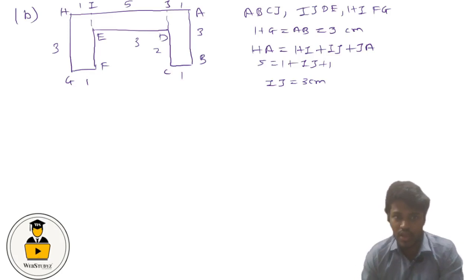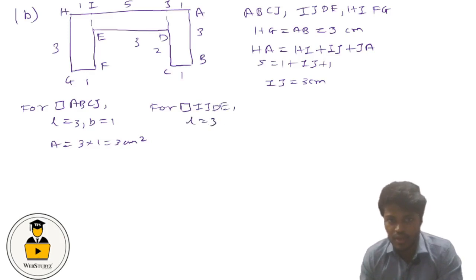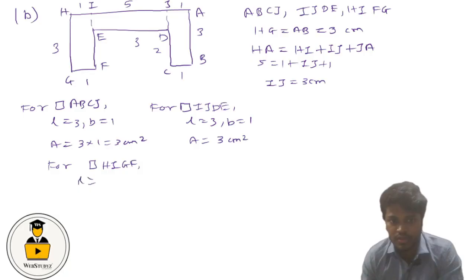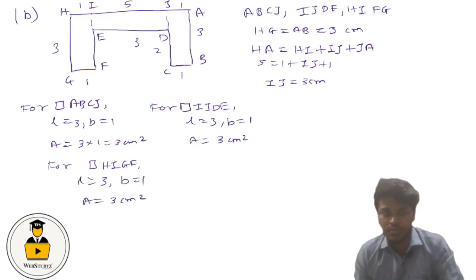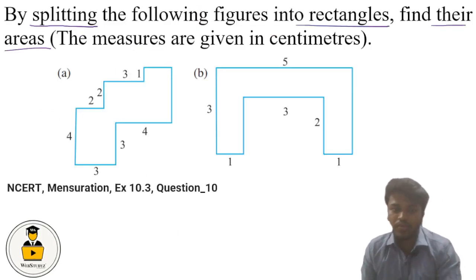Now we can find the areas. For rectangle ABCJ: length = 3, breadth = 1, area = 3 × 1 = 3 cm². For rectangle IJDE: length = 3, breadth = 1, area = 3 cm². For rectangle HIFG: length = 3, breadth = 1, area = 3 cm². Using the properties of rectangles, we have found the area of all rectangles in both figures. I hope you have understood it well, thank you.